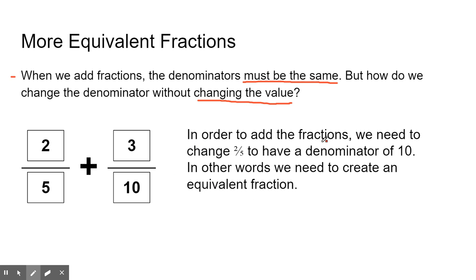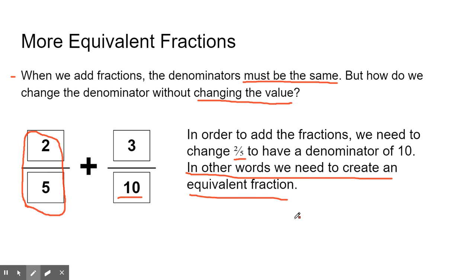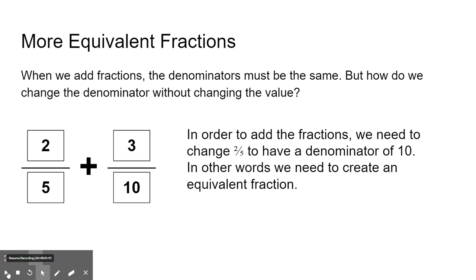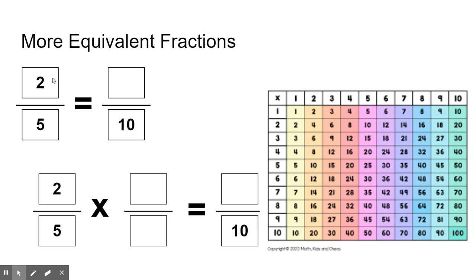In order to add the fractions two-fifths and three-tenths, we need to change two-fifths to have a denominator of ten. We need to change this fraction so it has a denominator of ten — in other words, we need to create an equivalent fraction. We remember from Tuesday that an equivalent fraction is a fraction that has the same value. So how are we going to change two-fifths so it has a denominator of ten?